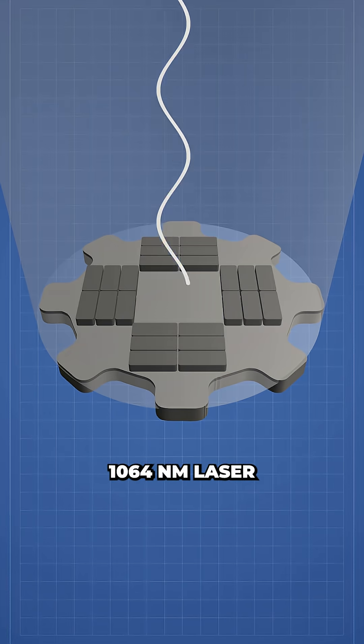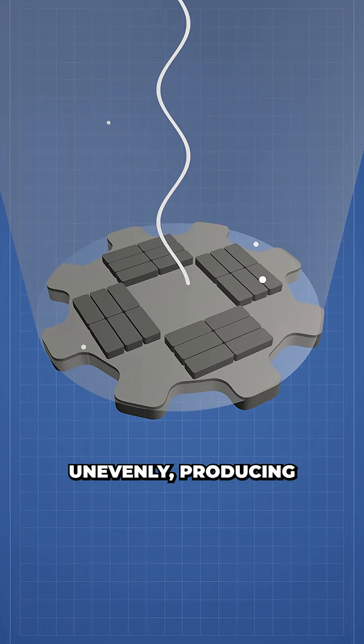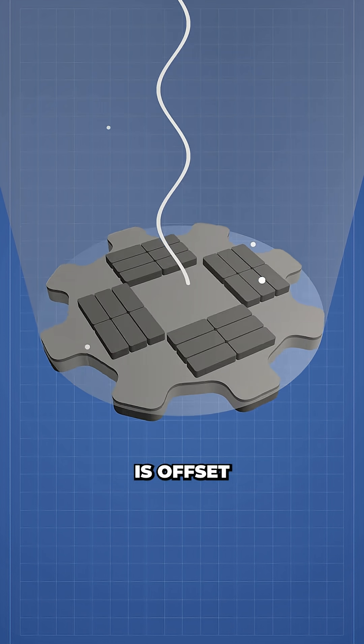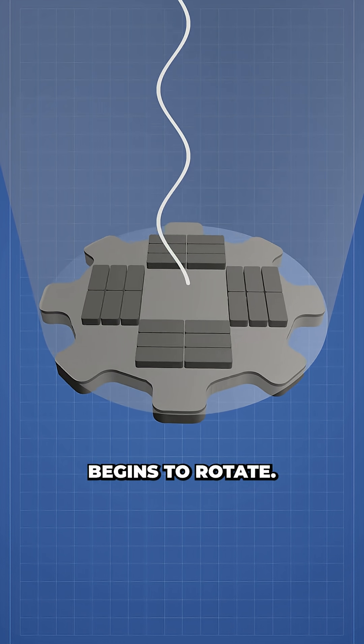And then by using a 1064 nanometer laser to illuminate the entire surface, photons would scatter unevenly, producing a tiny recoil on the gear. Because that force is offset from the center, it creates a torque and the gear begins to rotate.